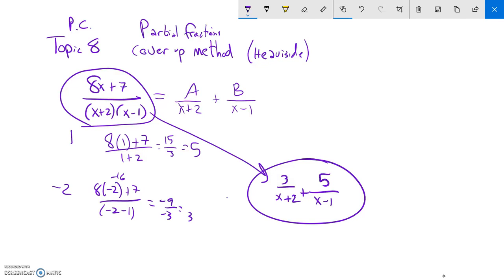And if I wanted to check, I could just do that addition. 3 times X minus 1 plus 5 times X plus 2. And I should get that back. And you notice I do, there's an 8X. There's a negative 3 plus 10 is positive 7. So that's how you do partial fractions with the cover-up method.